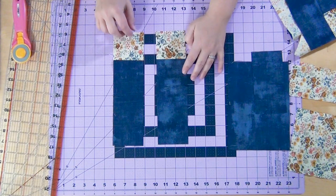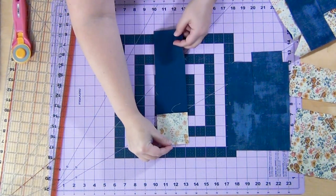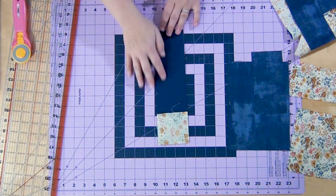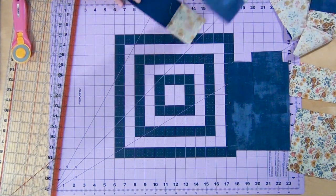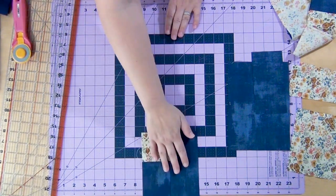And this is why it's called the flip flop block because you take one and you flip it and you're going to sew that together at a quarter of an inch. And it'll look like this when you're done. And then we're going to set that aside.